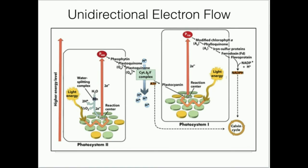We saw in another video that ATP is produced through ATP synthase via photophosphorylation, and that fuels the Calvin cycle. Ferredoxin NADP+ reductase forms NADPH, which also fuels the Calvin cycle. The whole purpose of the light-dependent reactions is to make ATP and NADPH so that the light-independent reactions — the Calvin cycle — can make sugar. In the next set of videos, we'll look at the light-independent reactions and see that their major function is to make sugar.